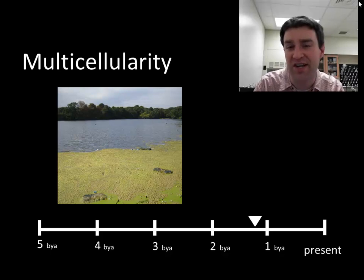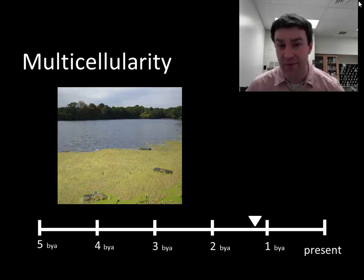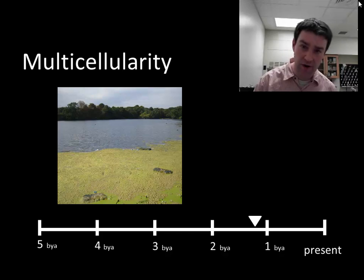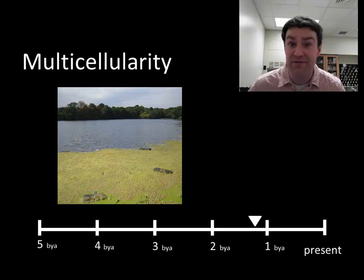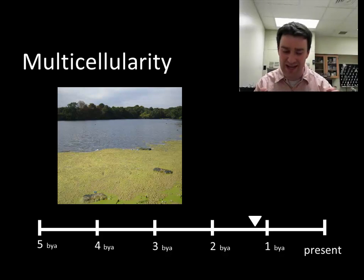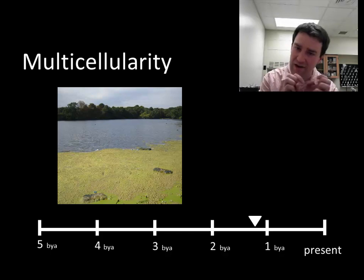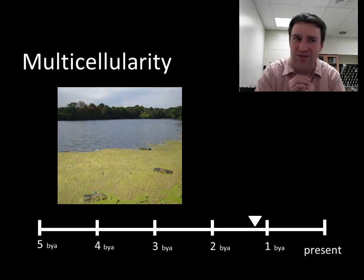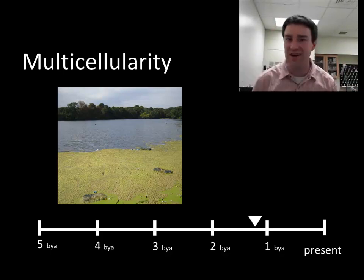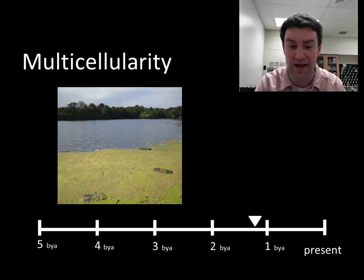Eukaryotic cells existed for hundreds of millions of years before we finally start to see multicellular eukaryotes. You have to be eukaryotic to be multicellular, although not all eukaryotes are multicellular — there are still single-celled eukaryotes like yeast and amoeba. We've never found multicellular prokaryotes. How multicellularity arose is not entirely clear. We see evidence of organisms grouping together in colonies, but how you go from that to producing offspring that start single-celled and grow into a multicellular form is genuinely uncertain.